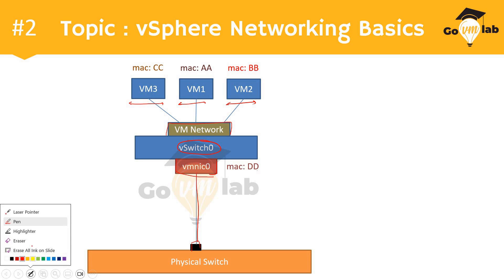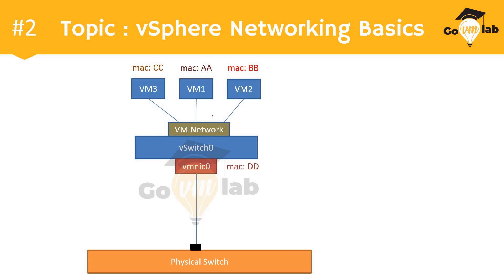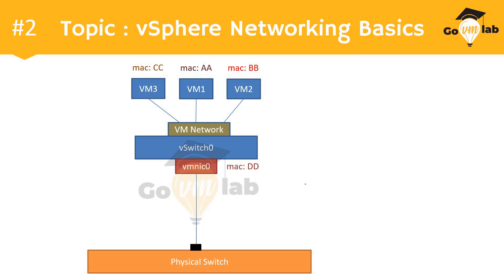What has been explicitly mentioned here is the MAC addresses. Every virtual machine has a VNIC and every VNIC has its own unique MAC address. VM1 has MAC address AA, VM2 has MAC address BB, VM3 has MAC address CC. VMNIC0 is also a physical network adapter — we call it an uplink or PNIC — and its MAC address is DD.